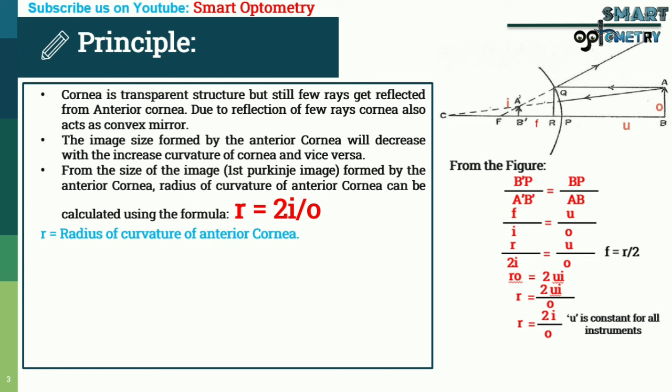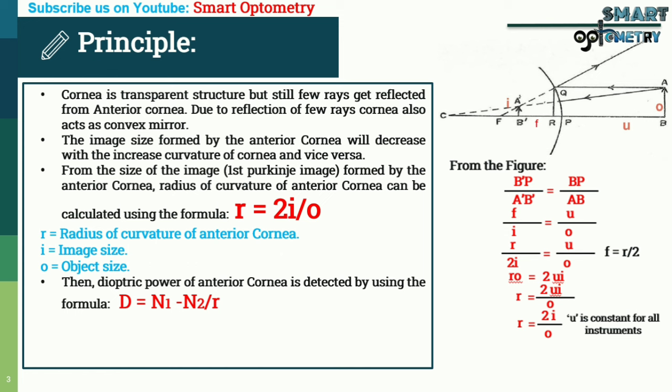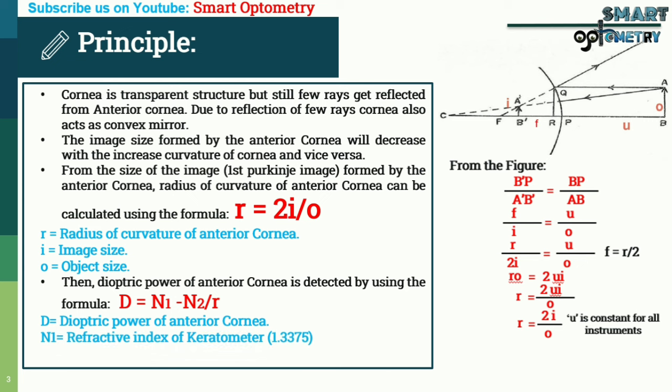In the formula R = 2i / O: R is the radius of curvature of anterior cornea, I is the image size, and O is the object size. The dioptric power of anterior cornea is detected using D = (N1 - N2) / R, where D is the dioptric power of anterior cornea, N1 is the refractive index of the keratometer (1.3375), and N2 is the refractive index of air (1).